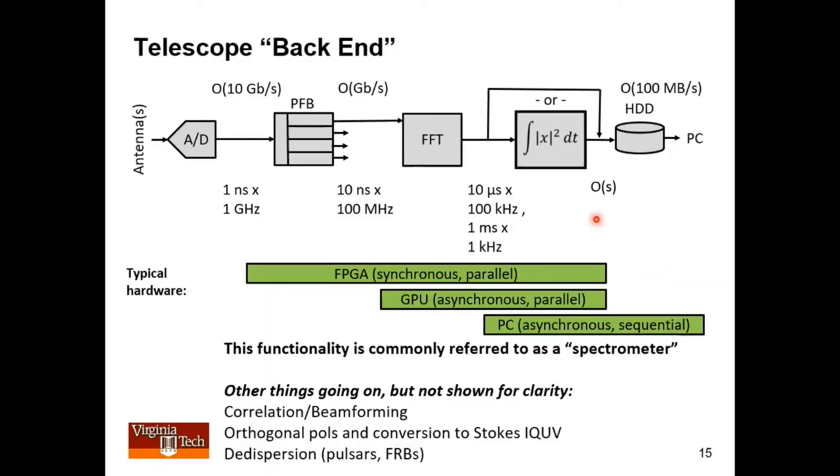So this is a very simplified view but if you keep this idea in mind it really applies to all telescope back ends that I can think of. What's different is how the chains get replicated, parallelized and interwoven depending on the type of astronomy you're doing.